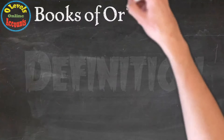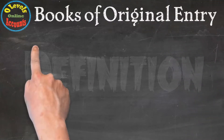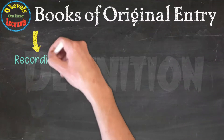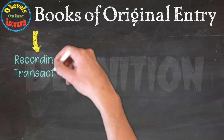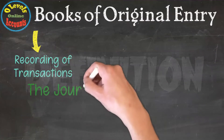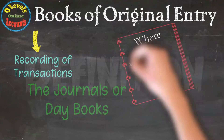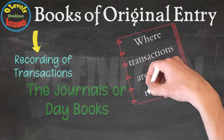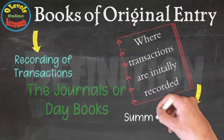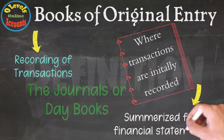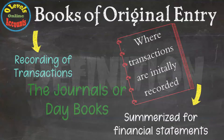The definition of Books of Original Entry refers to the accounting journals in which business transactions are initially recorded and summarized to prepare financial statements. We will discuss this working map in upcoming slides in this video.